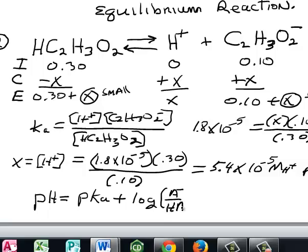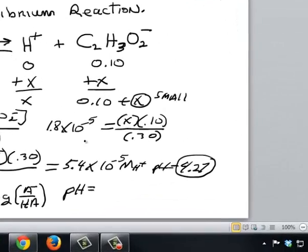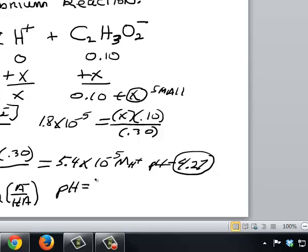Plus the log of the weak base concentration divided by the weak acid concentration. This is called the Henderson-Hasselbalch equation. So if I use the Henderson-Hasselbalch equation to calculate my pH, I get pH is equal to the negative log of the Ka. The Ka is 1.8 times 10⁻⁵. If I take the negative log of that, I get 4.74. And then plus the log of my resultant weak base concentration divided by my weak acid concentration. So that is going to be 0.10 divided by 0.30.